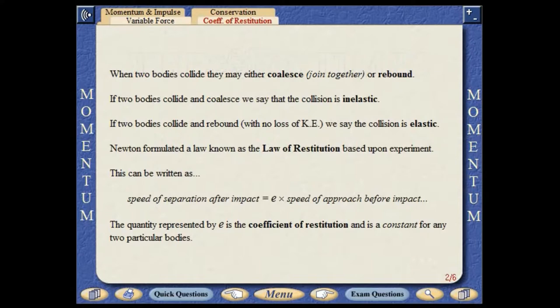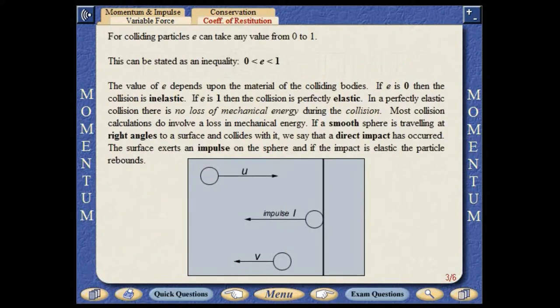The quantity represented by E in the equation is the coefficient of restitution, and is a constant for any two particular bodies. For colliding particles, E can take any value from 0 to 1. The value of E depends upon the material of the colliding bodies.